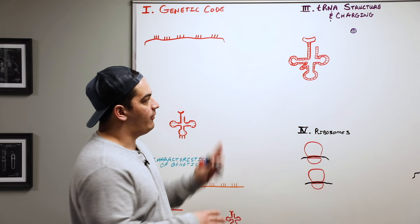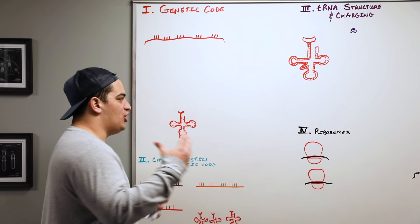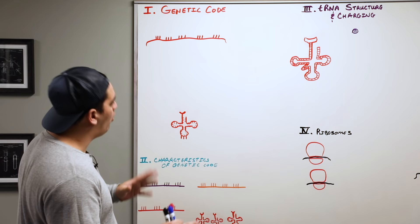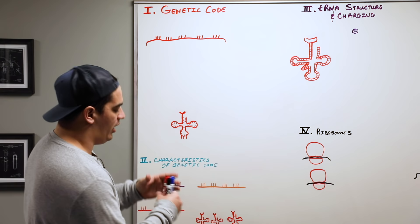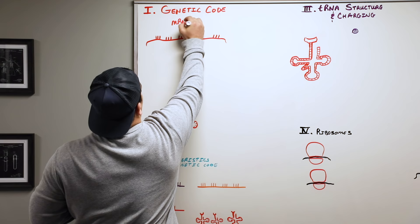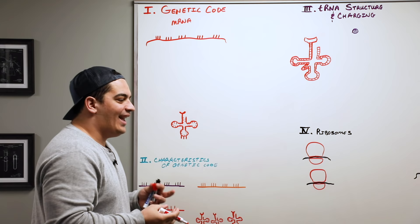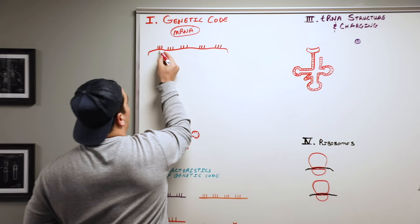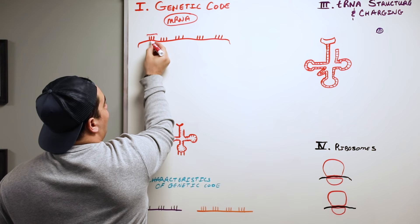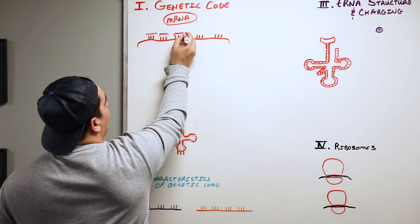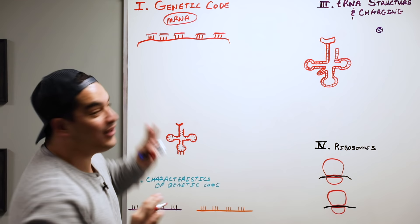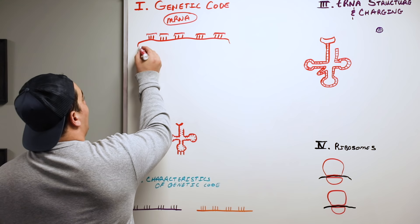The first thing we need to talk about is the genetic code. Here we have a molecule of mRNA. mRNA is very important for the translation process — messenger RNA has a very specific sequence of nucleotides in triplet forms. Each group of three nucleotides spans along the length of the mRNA molecule. The orientation matters: on one end you have the five prime end with a five prime cap.